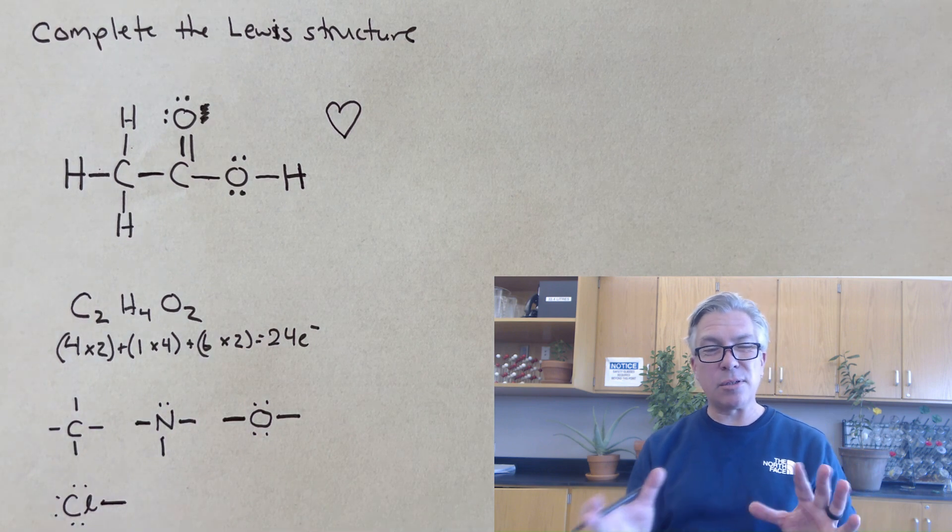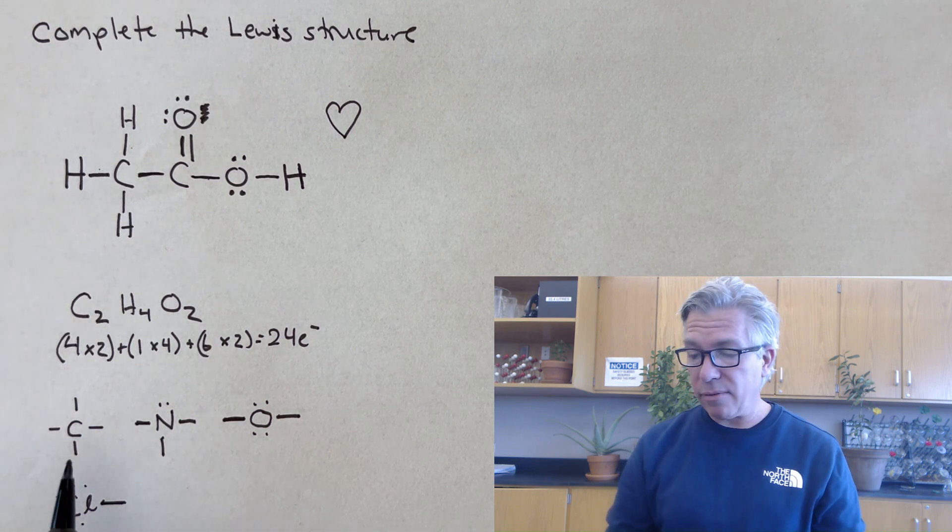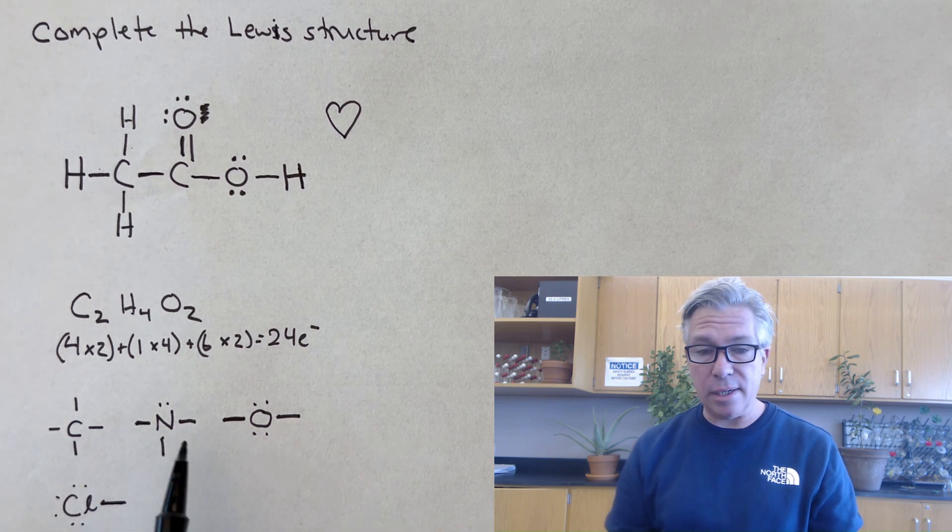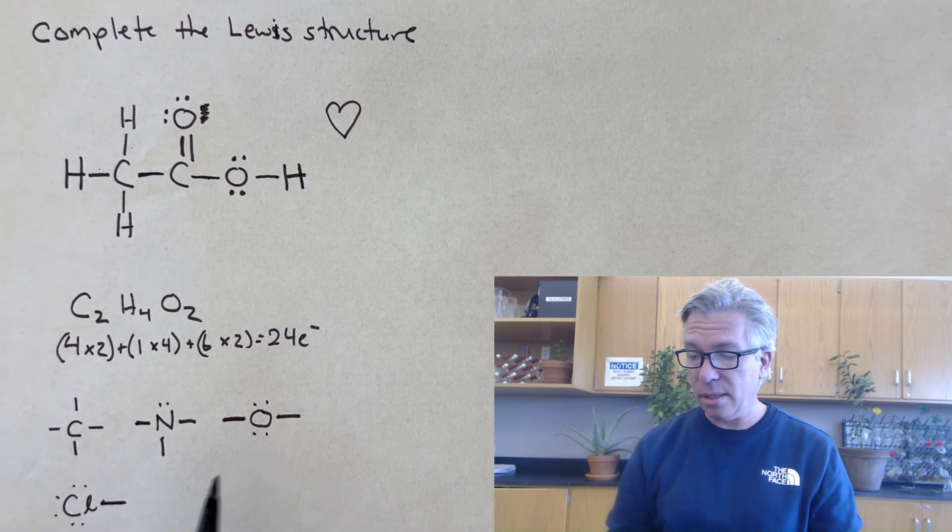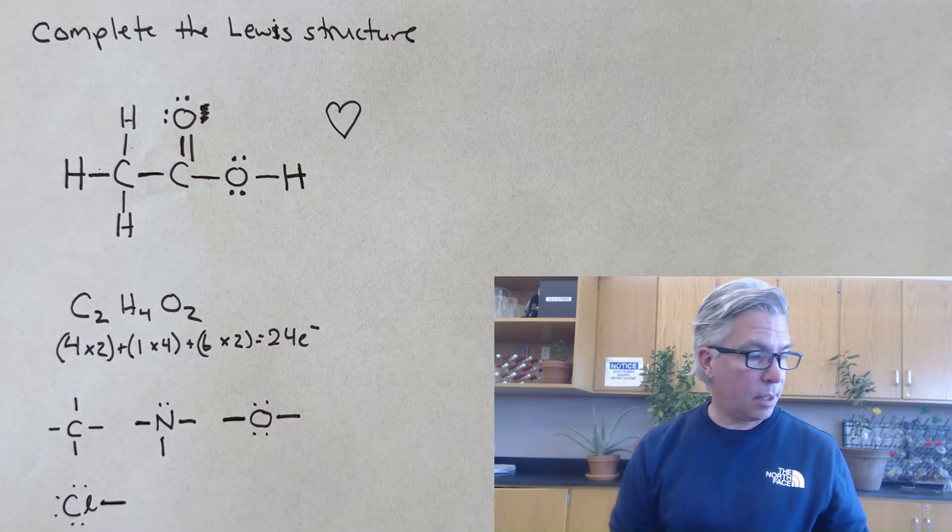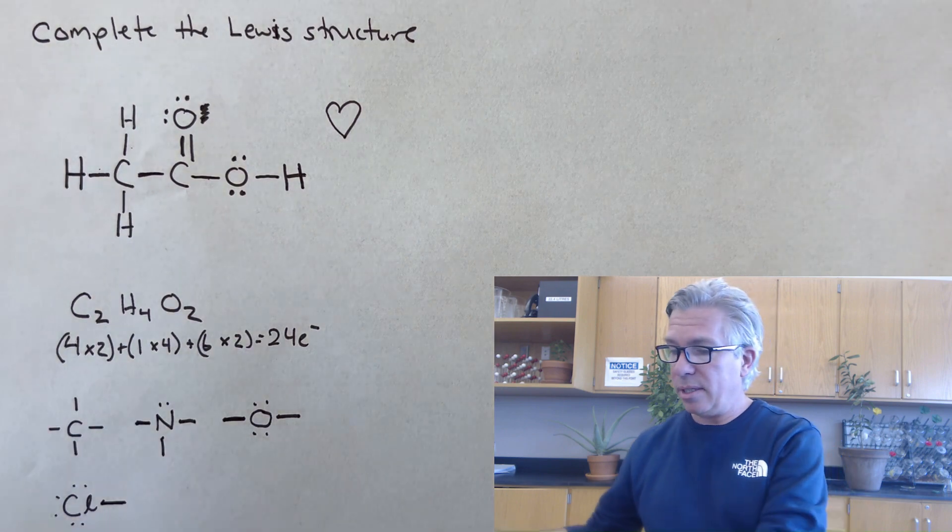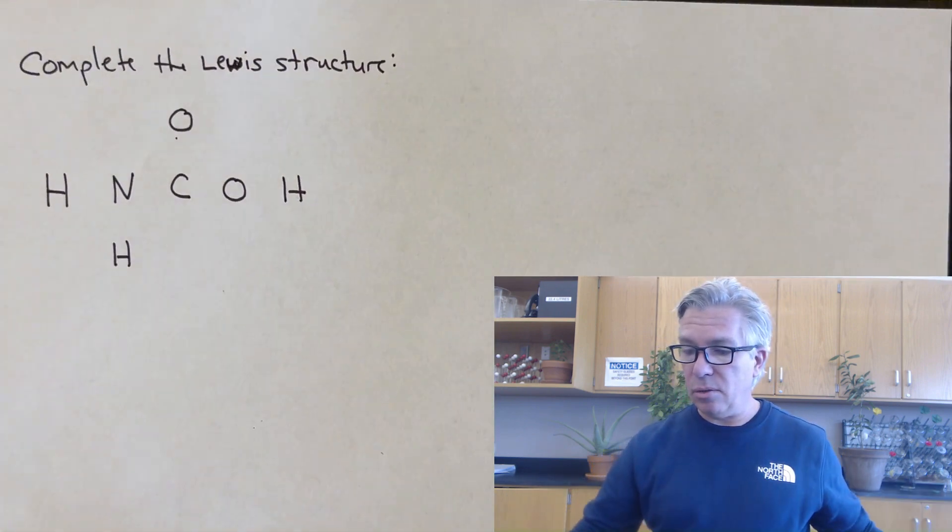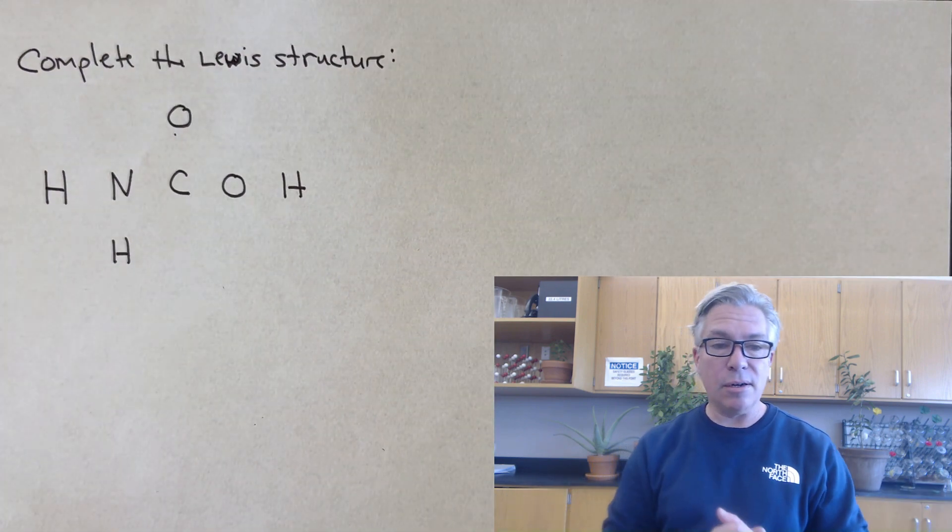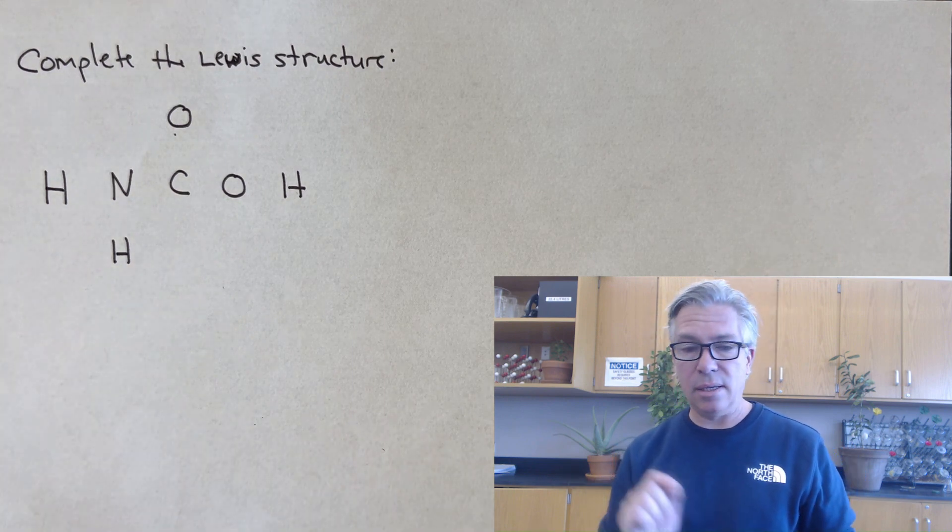And when you're doing these problems, sometimes there's more than one way for them to satisfy the octet rule, but you're generally looking for carbon to have four, nitrogen to have three, oxygen to have two bonds, halogens one, and so on. And hydrogen, of course, one. All right. So let's take a moment and I'll put up another example. So you can feel free to pause the video and see if you can complete this Lewis structure in the same way we completed the last one.